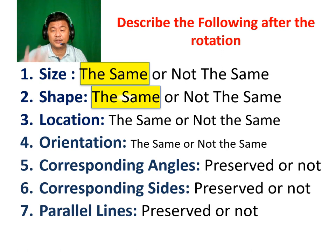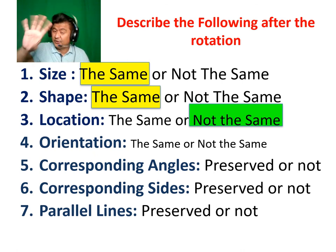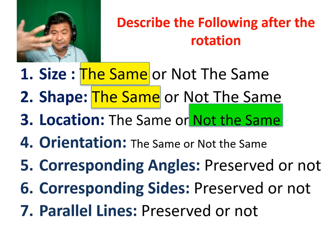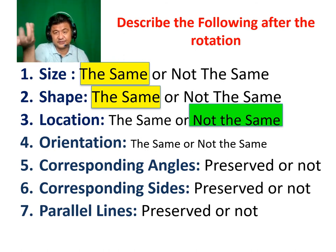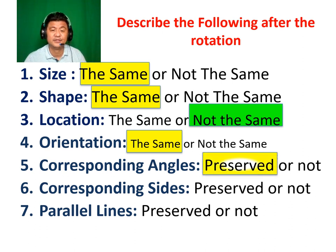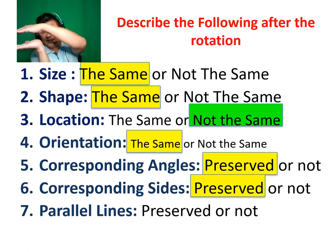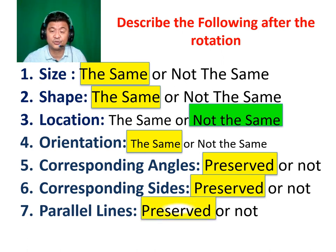How about the shape? Yes, they are the same. How about the location? It moved to another location, so not the same. How about the orientation? It looks like it's flipped, but it's not actually flipped — it just turned around. There is no flipping. The orientation is still the same. Corresponding angles — the 90 degrees is still 90 degrees, so preserved. How about sides? Did the lengths change? No, preserved. And if there are parallel lines, when you turn around, the parallel lines are also preserved.